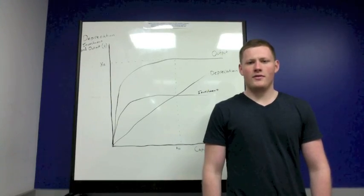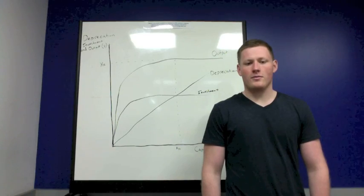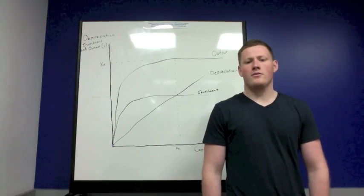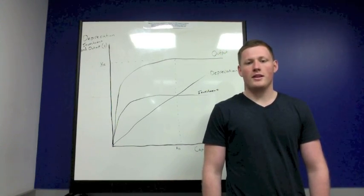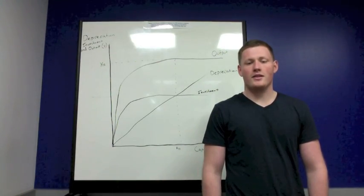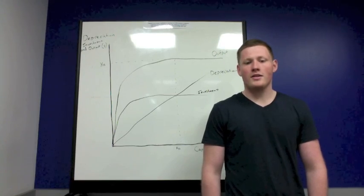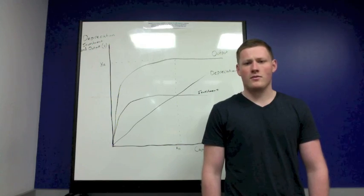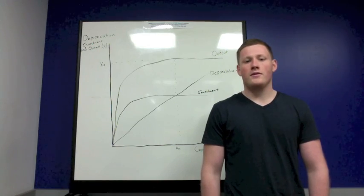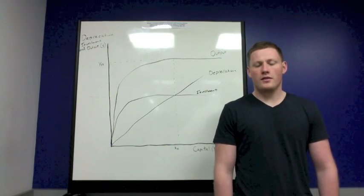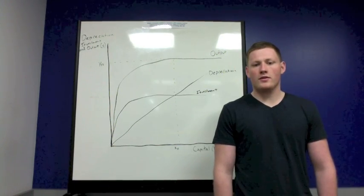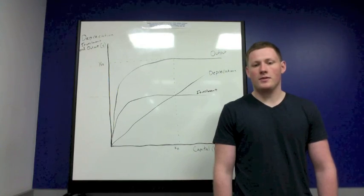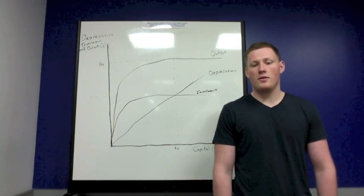To start off, here's a bit of background on the Solow model. The Solow model was created by Robert Solow in 1956 and it won the Nobel Prize in economics. The Solow model is a very simple model of economic growth in that it only focuses on one variable: physical capital per worker. The Solow model uses physical capital to describe the differences between countries' output and income per worker.